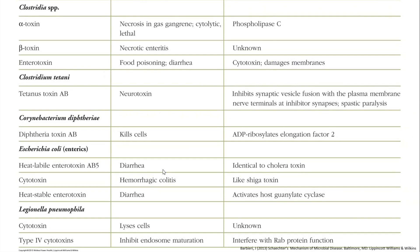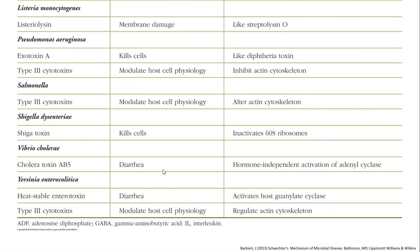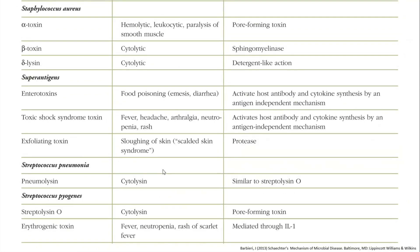Corynebacterium diphtheriae produces the diphtheria toxin, which leads to cell death by irreversibly inhibiting host cell protein synthesis. Further down we have some enteric toxins, Legionella, and we will talk more specifically about Pseudomonas, Staphylococci, superantigens, and Streptococcus.